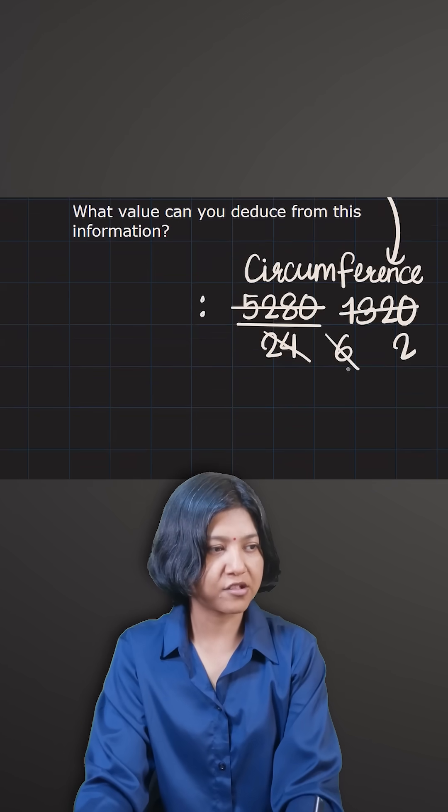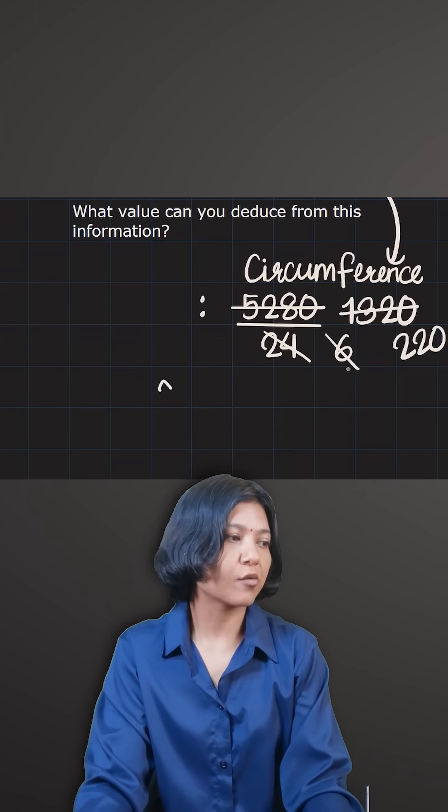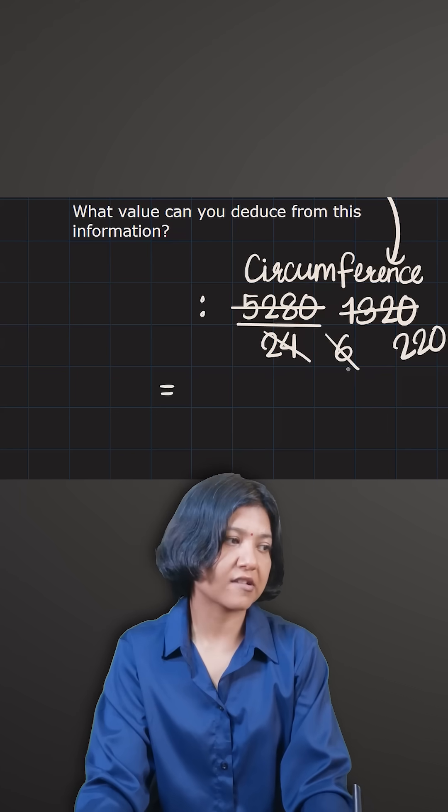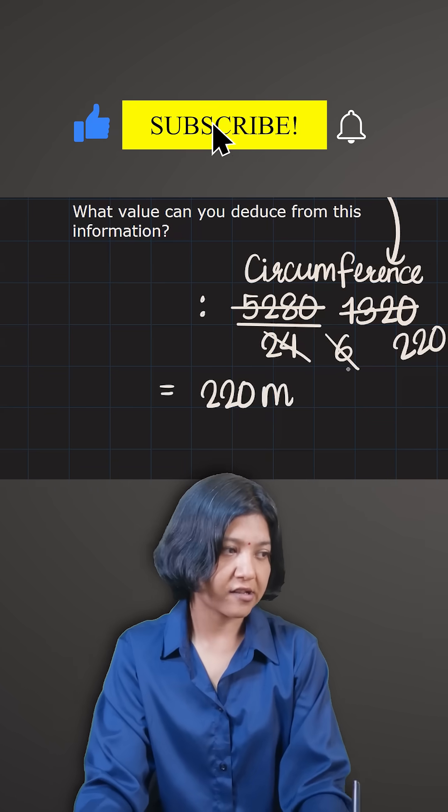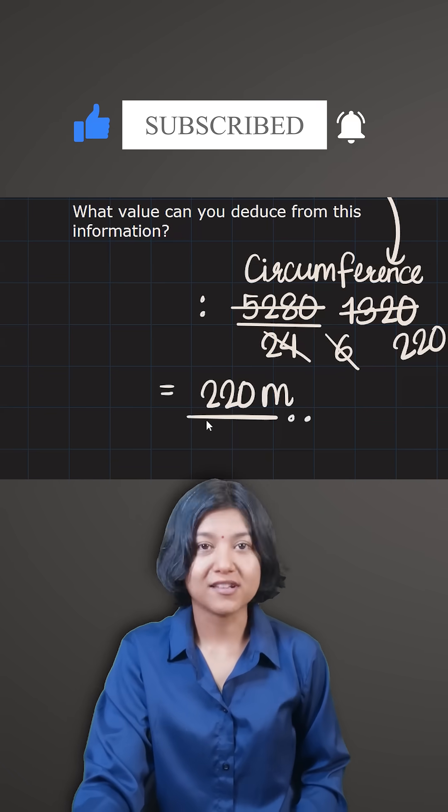Now six divides 1320. Six into two is twelve, six into two is twelve, 220. So what we got from this question is that the circumference here has to be 220 meters. That is the information we deduced from this question.